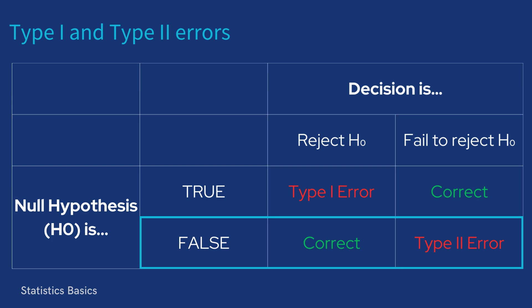When the null hypothesis is false and the decision is to fail to reject the null hypothesis, a type 2 error occurs. This means we've incorrectly concluded that there's no effect or difference while in reality there is one.